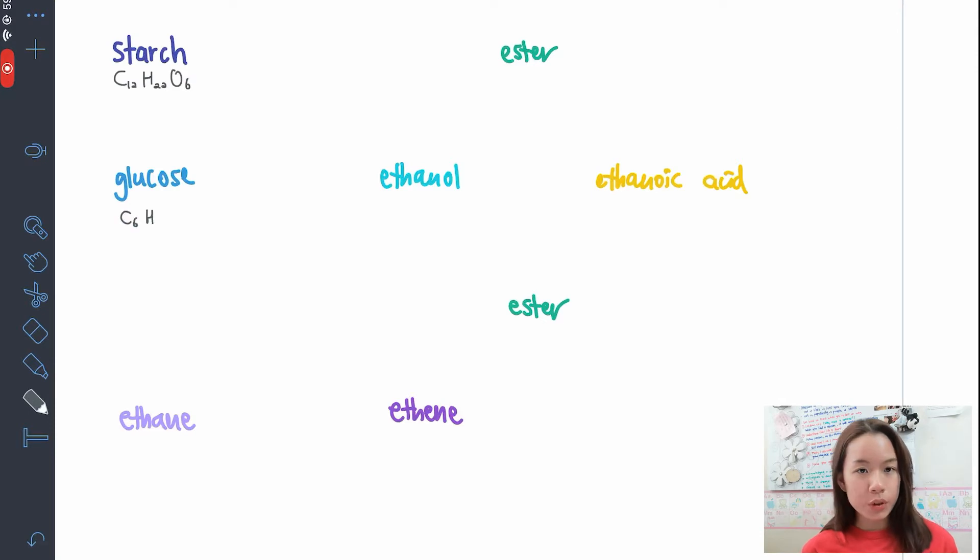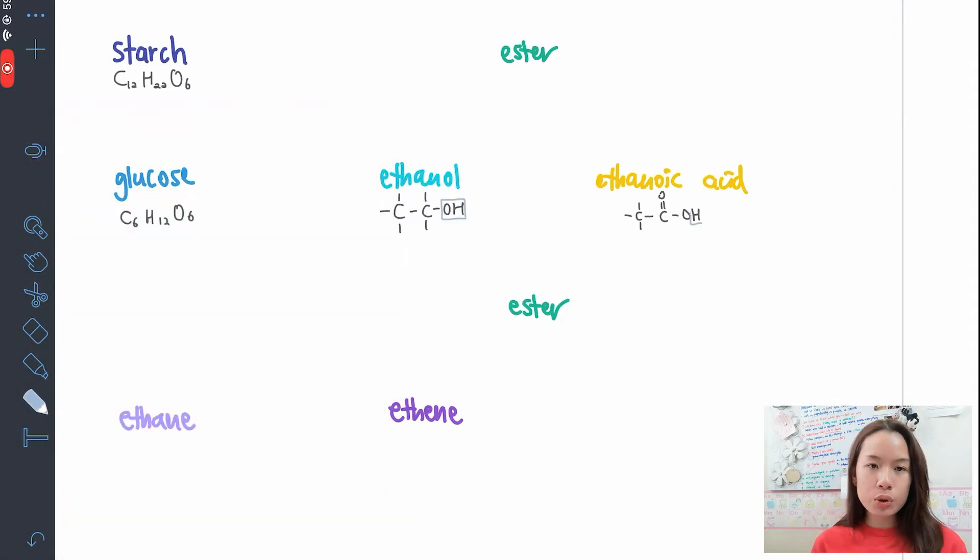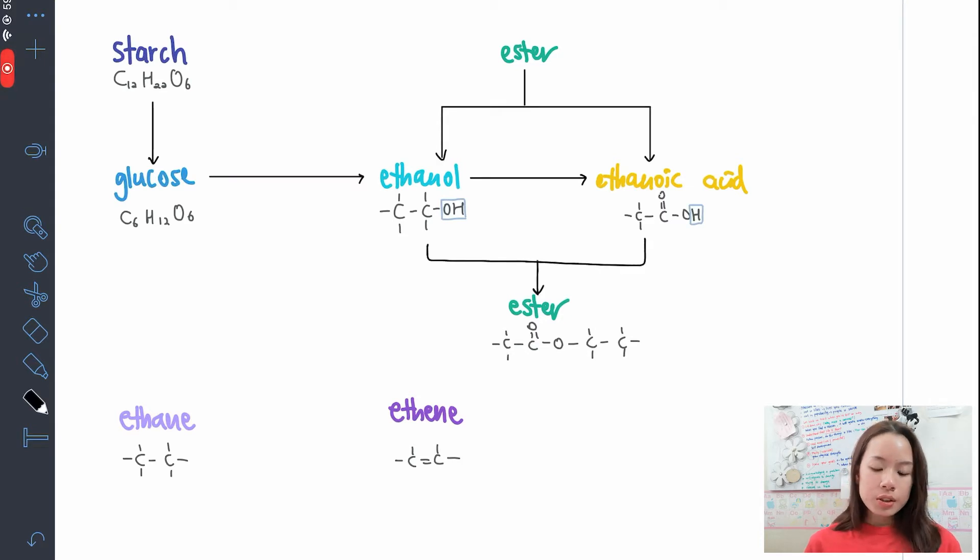So first thing, write all the names for the homologous series first, and write their molecular formula. I'm using ethanol because fermentation can only form ethanol, please be careful of this. And glucose, which is the monosaccharide, is derived from starch, the polysaccharide. So I'm including starch and glucose in this note, because there's one question in past year asking how to form ethanol from starch. I'll be using the structure formula because structure formula is easier to see how to form the ester.